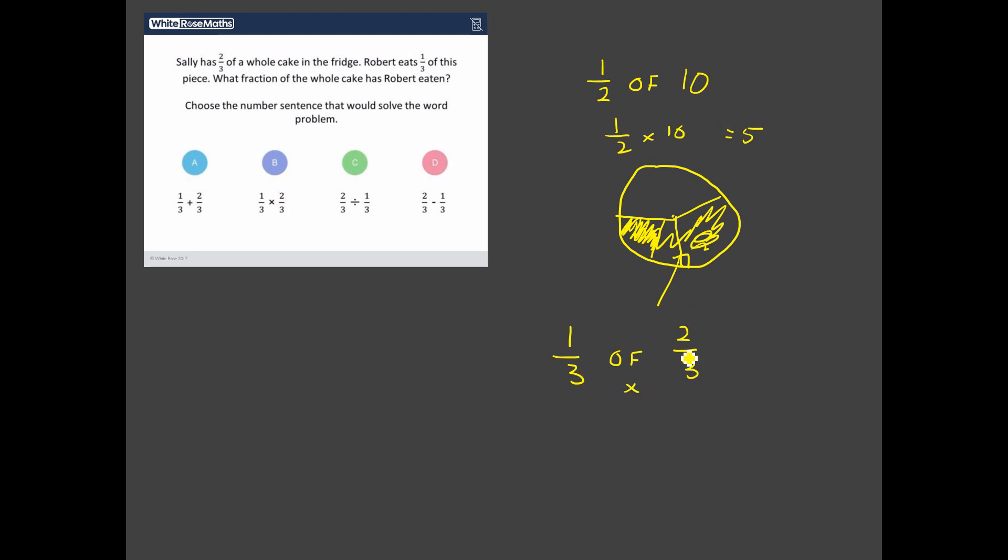Now, the question hasn't asked us to work it out, but we might as well for a laugh. A third of two-thirds. Well, when you multiply fractions, you multiply the numerators. One multiplied by two is two. And you multiply the denominators. Three multiplied by three gives you nine. So, the piece that Robert ends up with is two-ninths of the whole cake. And if you look at my terrible drawing, I'm claiming this is Robert's bit here. And I think, hopefully, you can imagine that that's roughly two-ninths. If I split that in two, there's a ninth. Could you imagine that that's going to cover nine pieces around there? Maybe. Again, it's not the best diagram in the world. But a third of something means a third multiplied by something.